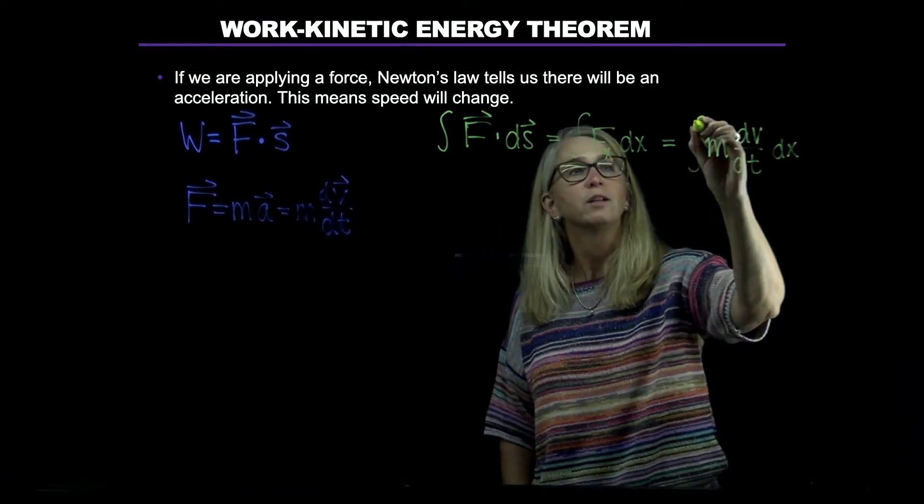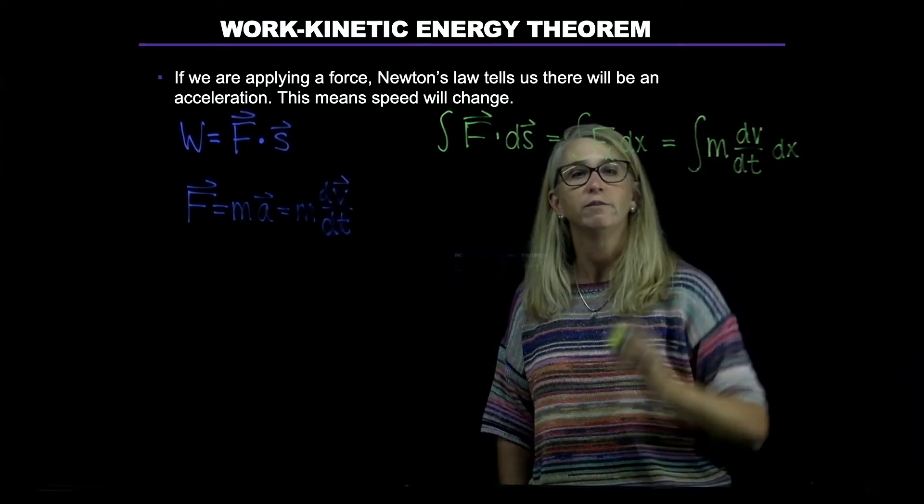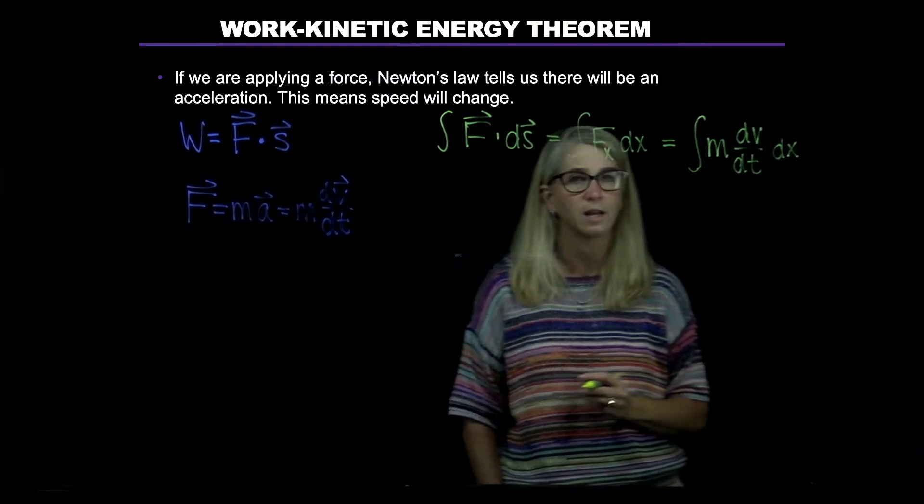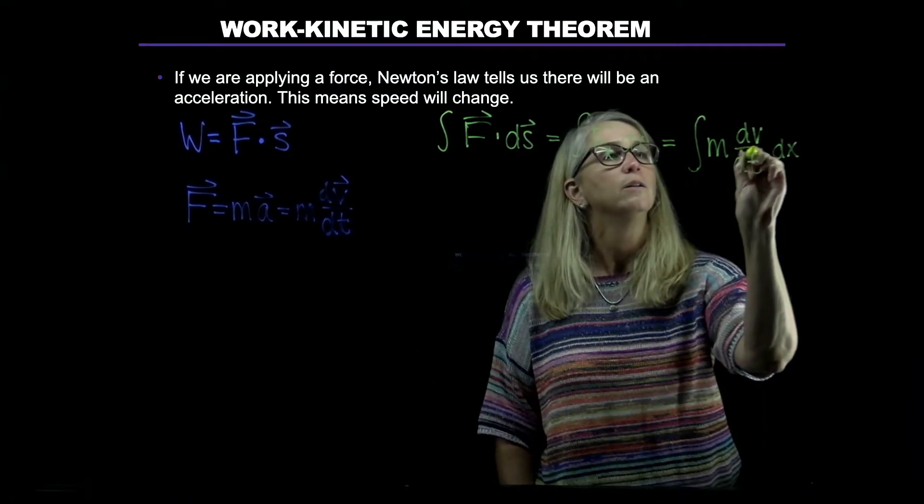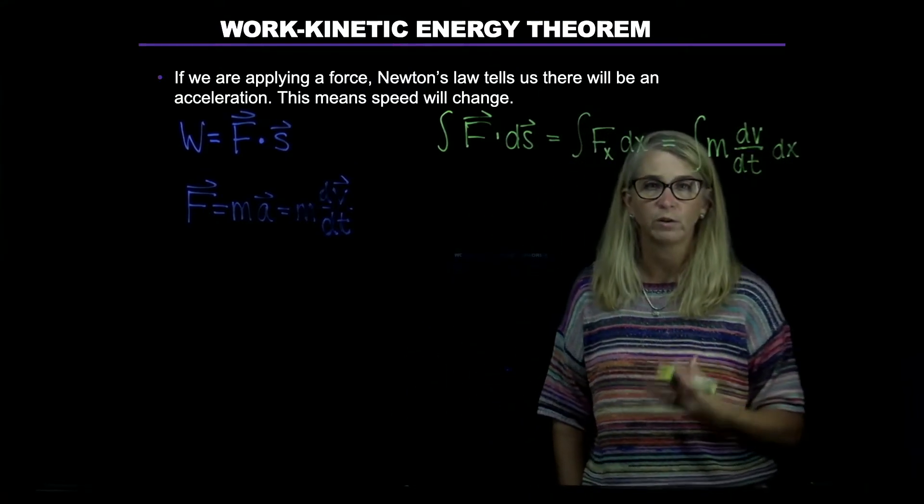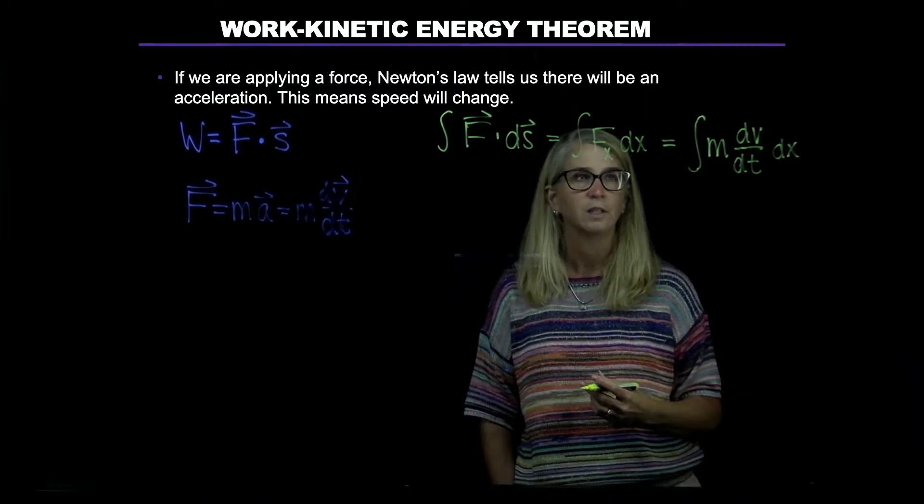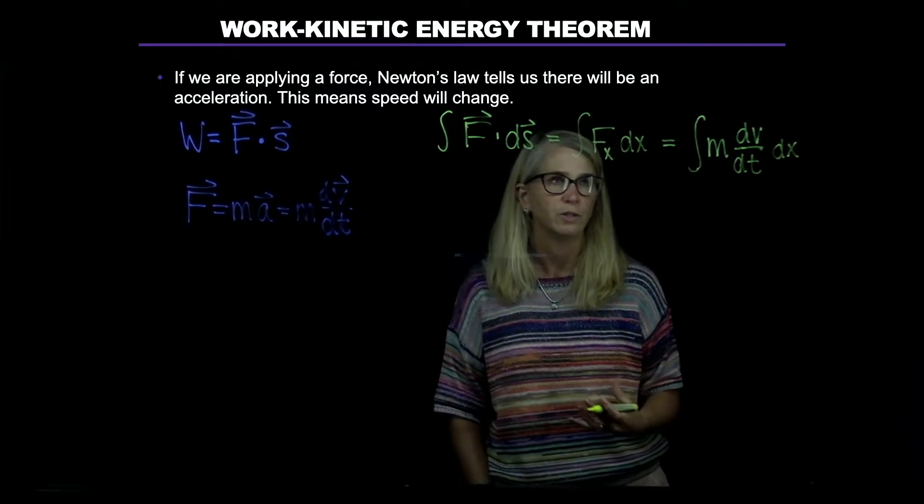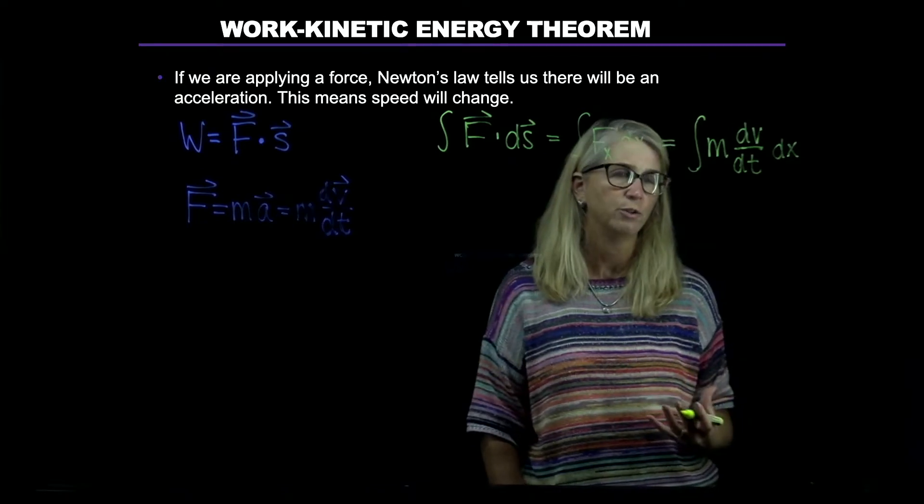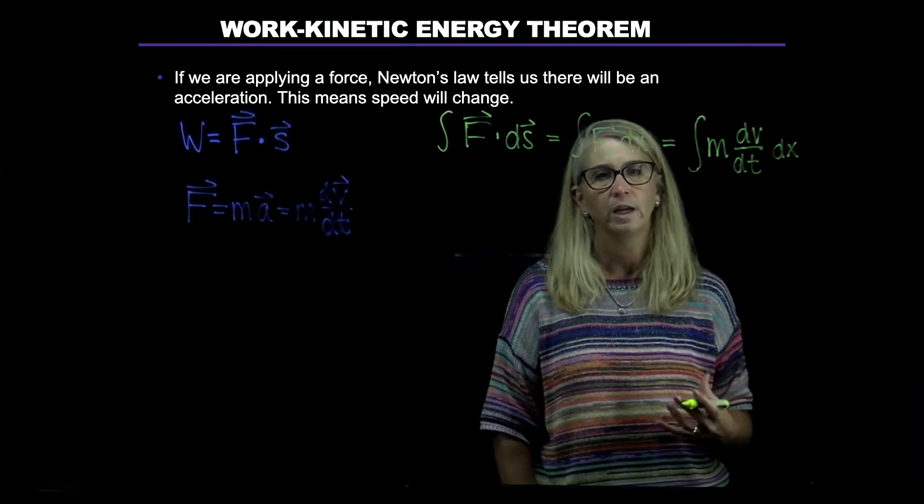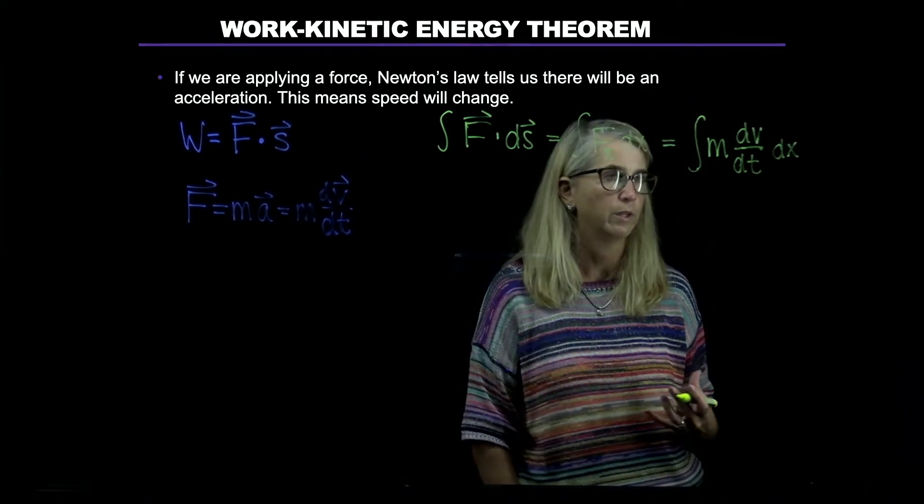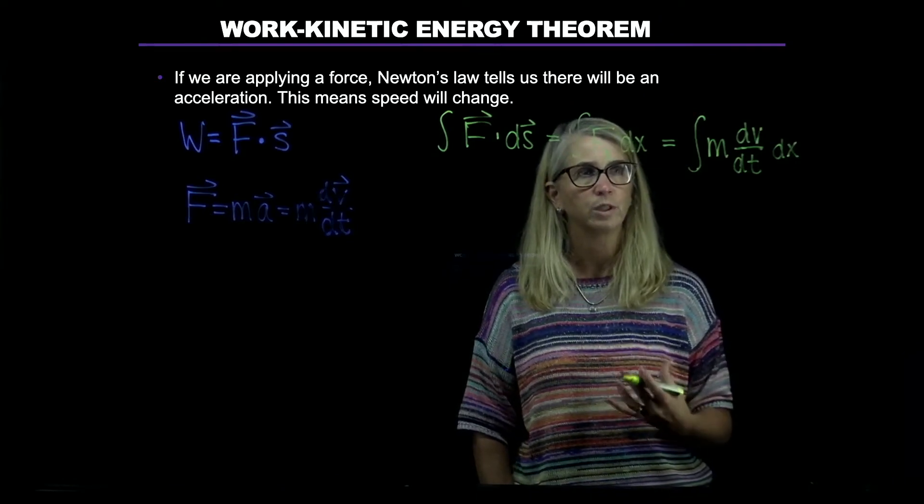The acceleration is the derivative of velocity with respect to time. Now we've put that in for force, but we still have the dx. There's two different ways we can do this. I'll go first with the way the book does it, but then I'll show you another way that mathematically makes a bit more sense.